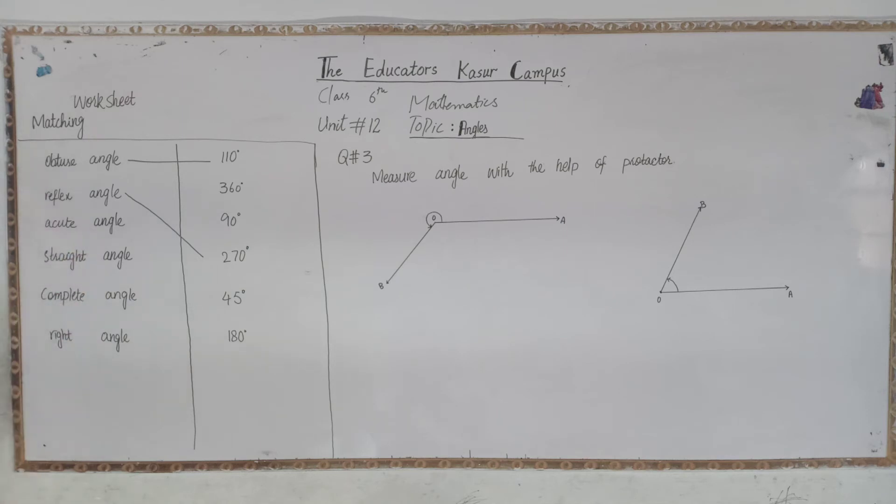Next is acute angle. Acute angle definition: this angle which is smaller than 90 degrees, so let's see which angle is less than 90 degrees. This is 45 degrees. This is acute angle.